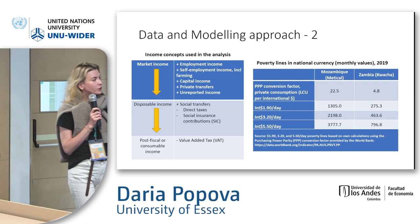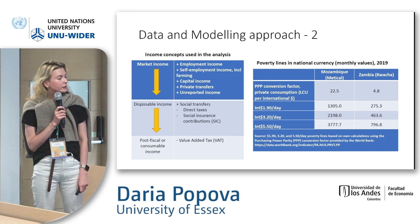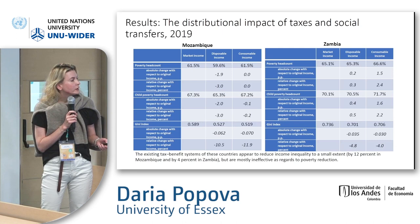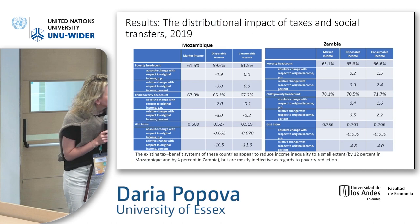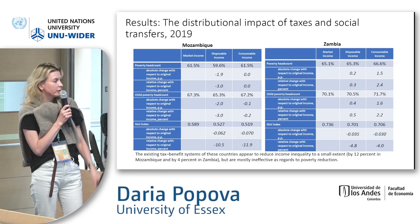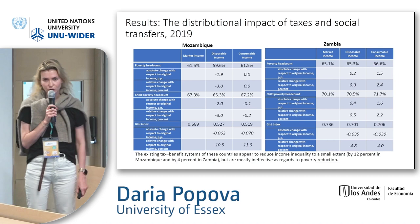The table shows the poverty lines expressed in national currency. I am mainly using the $1.90 per day threshold. The reason is that even with this measure, the share of the population below the poverty line at consumable income is 61.5% in Mozambique and 66.6% in Zambia — quite a high poverty level — so I did not consider higher thresholds.